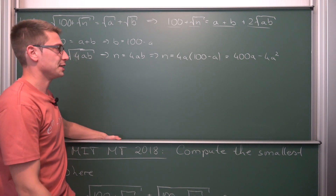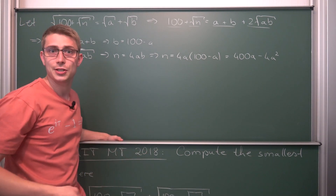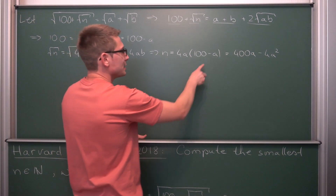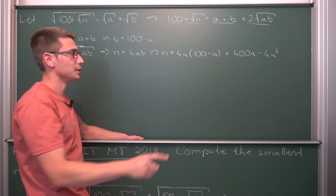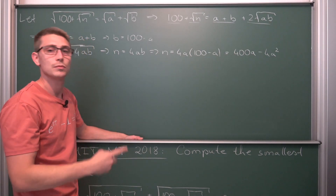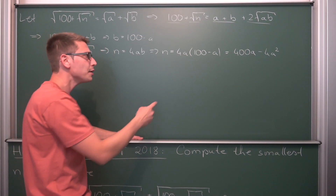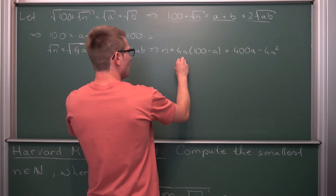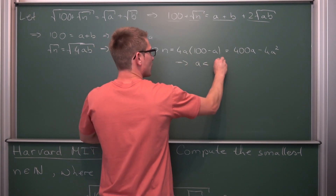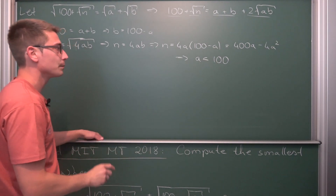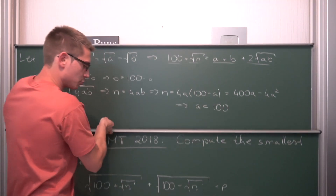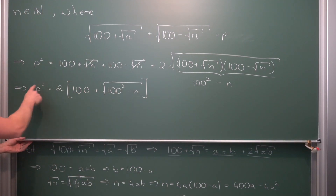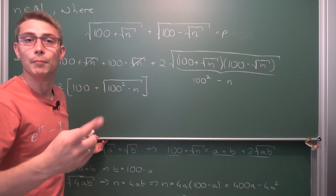Now, n must be a positive integer — natural numbers without zero. This is only the case if a is strictly less than 100: if a = 100, n = 0, which violates our constraints; if a > 100, n is negative, also not possible. So a must be less than 100. Now we know what n is. Let's plug our new expression for n back into p² = 2(100 + √(100²−n)).